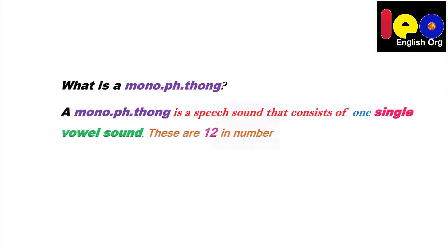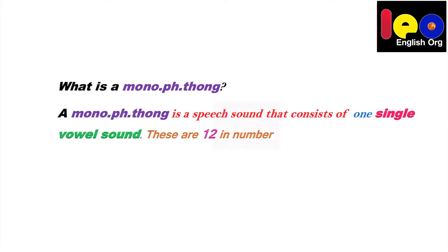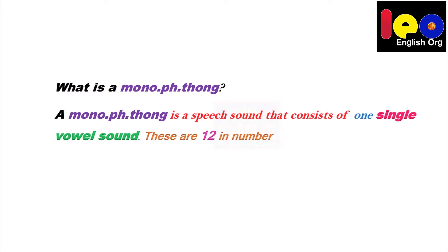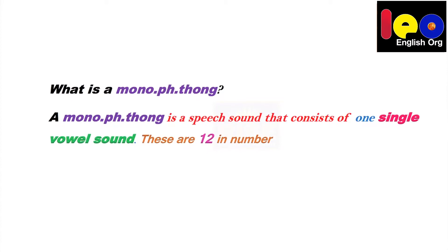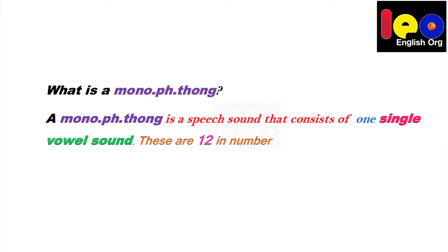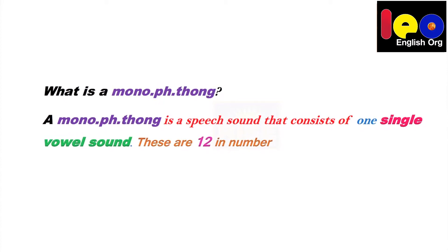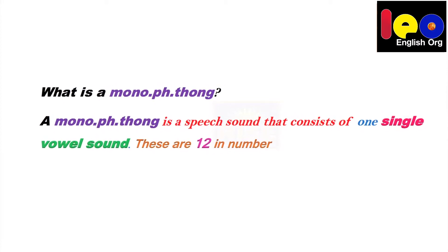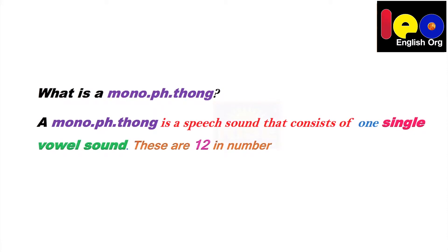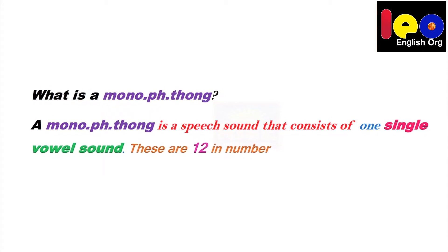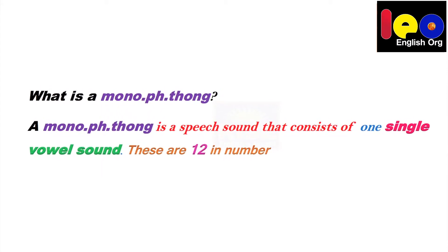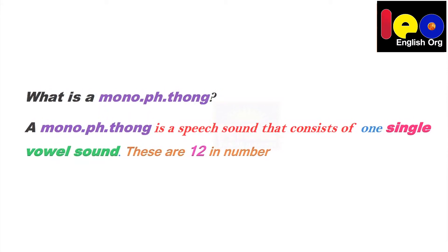What is a monophthong? A monophthong is a speech sound that consists of one single vowel sound. These are 12 in number. Now let's learn all these 12 monophthongs.